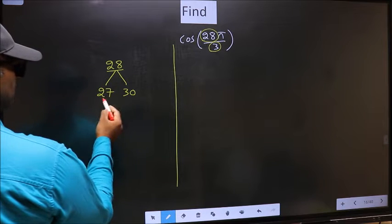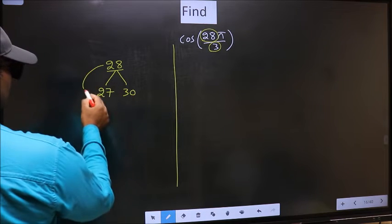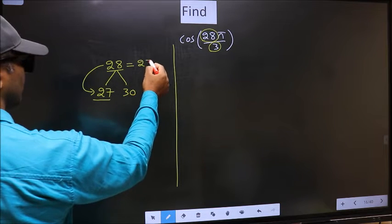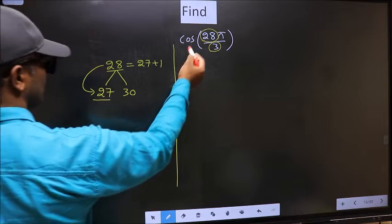28 is close to which multiple? This is close to 27. So now, 28 should be written as 27 plus 1.